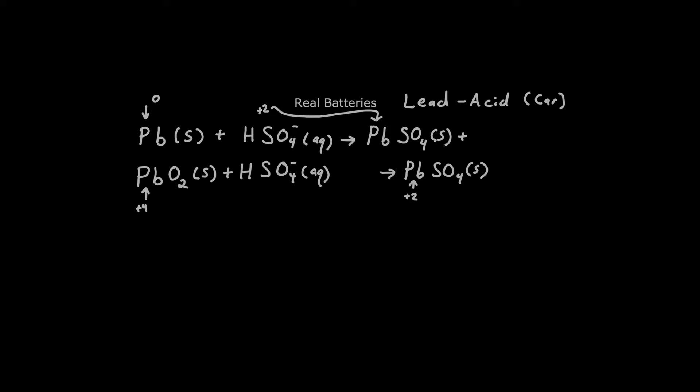So we can see that we have lead zero on the left, and we have lead plus two. We know the sulfate ion is minus two, so the lead must be plus two. So it looks like we oxidized the lead, and then it lost two electrons.